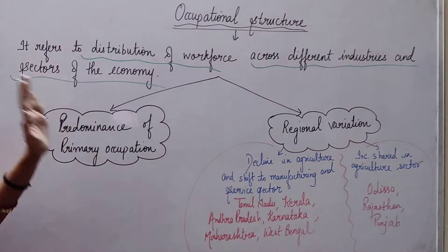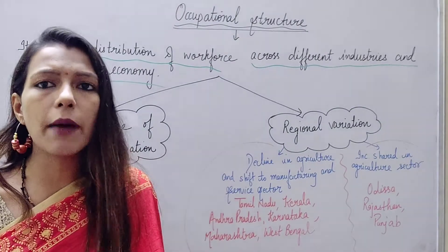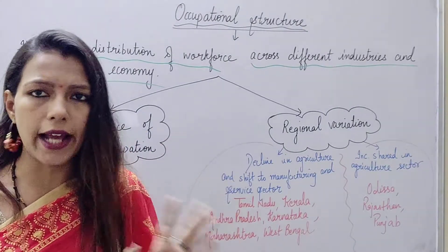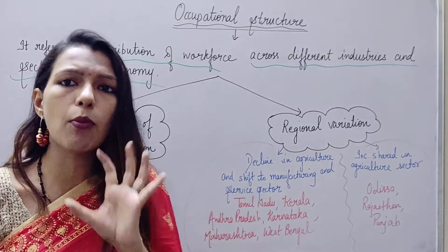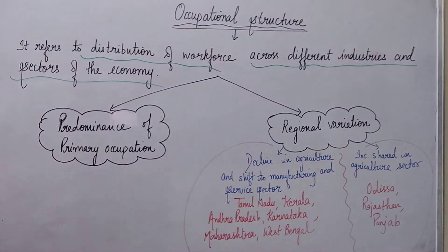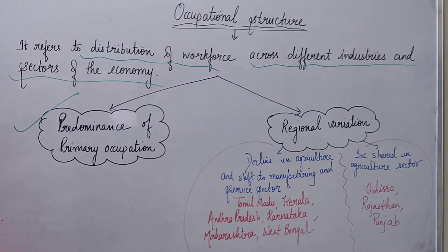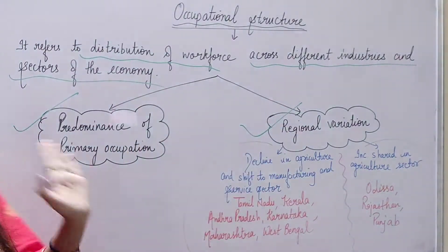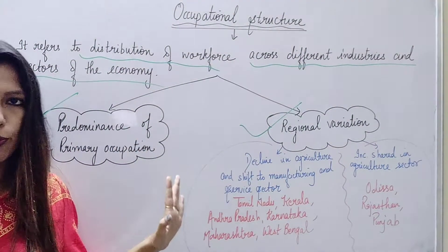Now class, this is a short topic. If it comes to exams, it will not come as a long question — it will not carry 6 marks because the content of the topic is very limited. When we study the Occupational Structure, we have two points: one is Pre-Dominance of Primary Occupation, and the other is Regional Variation. In this class, we will discuss Pre-Dominance of Primary Occupation.